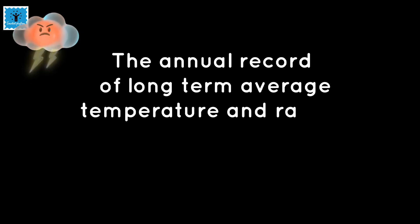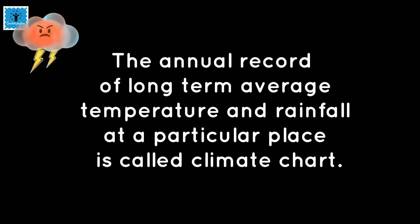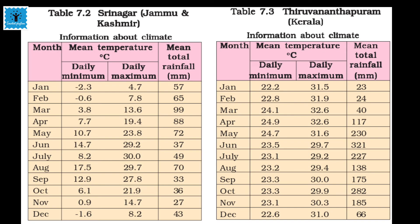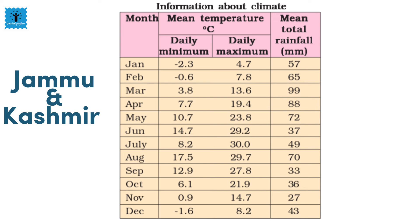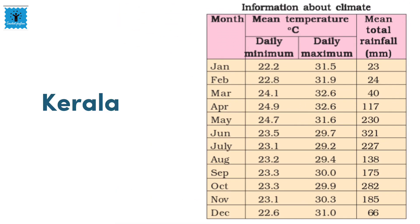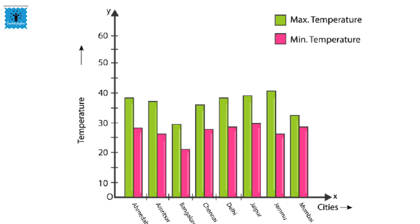The average temperature and rainfall of a particular place recorded annually is called a climate chart. Looking at the climate chart of Jammu and Kashmir, the temperature is quite moderate and it receives enough rainfall, showing that its climate is cold and wet. Looking at the climate chart of Kerala, it is quite hot and very wet as it receives more rainfall.